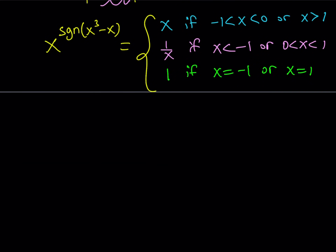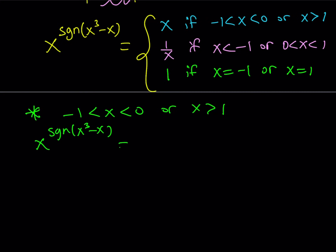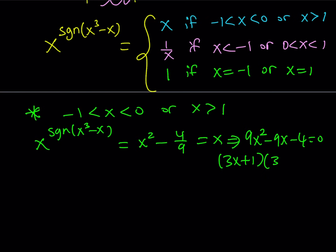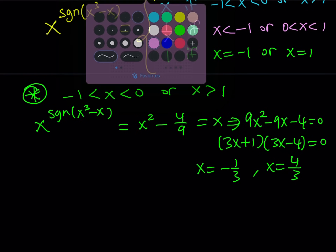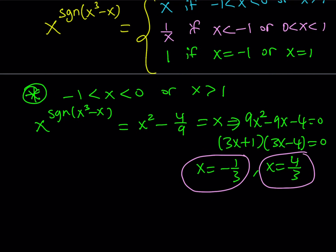Let's write our equation based on this definition and look at different cases. Case 1: if x is between negative 1 and 0 or greater than 1, then x to the power of signum(x³-x) equals x, and we know it also equals x² minus 4 over 9. This gives a quadratic equation. The quadratic is factorable and we get two solutions: x equals negative one third or x equals four thirds. Both of these satisfy the criteria x in (−1, 0) or x > 1, so they are valid solutions.